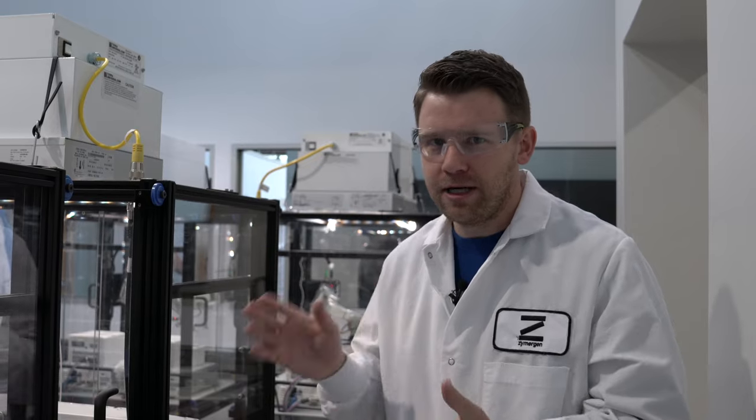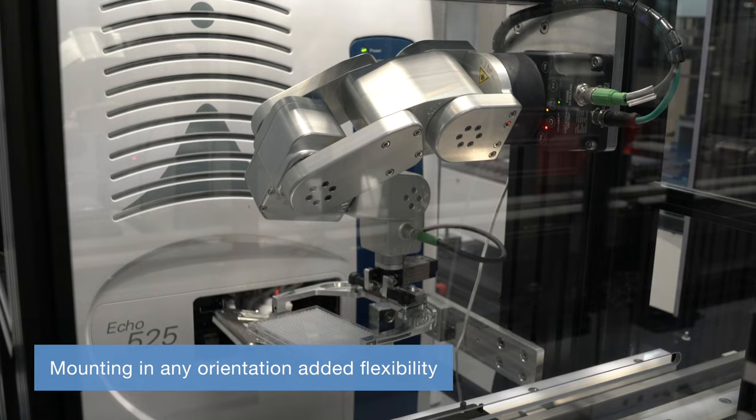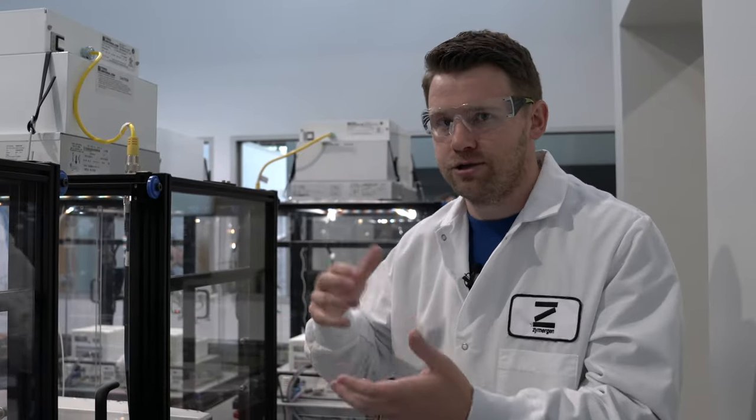One of the things that we really like about the Mecca 500 robots is how easy it is to mount in different orientations. Being able to mount the robot in different orientations is crucial to being able to use this in so many different places.